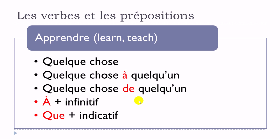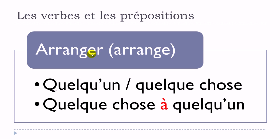Next verb: arranger. First structure — no preposition: arranger quelqu'un or arranger quelque chose. Second structure: arranger quelque chose à quelqu'un. So to summarize: arranger quelqu'un, arranger quelque chose, arranger quelque chose à quelqu'un.